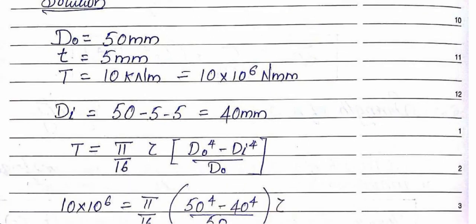The torque T is 10 kilonewton-meter. We need to convert units: kilonewtons to newtons. One kilonewton equals one thousand newtons, so 10 kilonewtons equals 10×10^6 newton-millimeters.